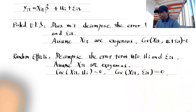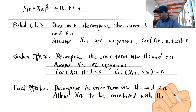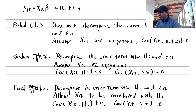The fixed effects estimator decomposes the error term into the individual-specific component mu_i and the random component epsilon_it. It allows the explanatory variables to be correlated with the individual fixed effects mu_i. We have learned the first differencing method and the fixed effects dummy variables method. The former eliminates the individual fixed effects component, while the latter estimates the fixed effects directly.